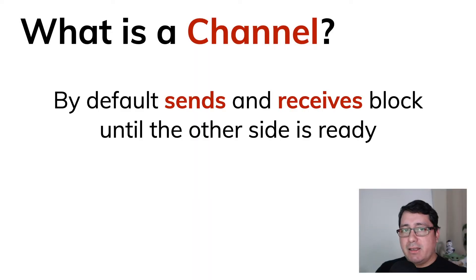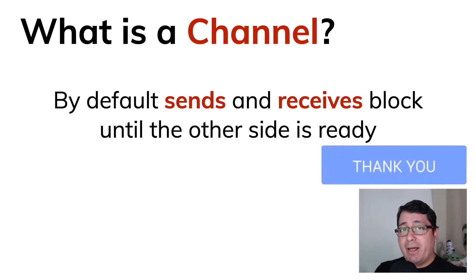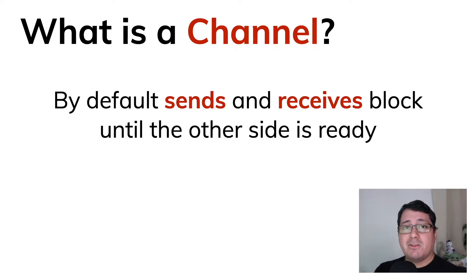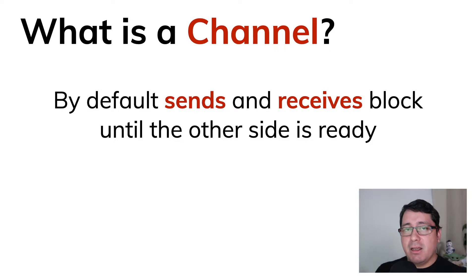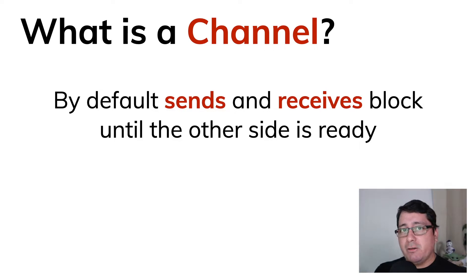Channels by default, when you're sending and receiving, will block until the other side is ready. That's why the first example gave us a panic — nobody else was using that receiver or sender. In the second example, everything works because we're accessing the channel through the goroutine that happens to be anonymous inside the main function. By default, these unbuffered channels will block until something else is using it — and it's important to notice this because it will make more sense in the next examples.